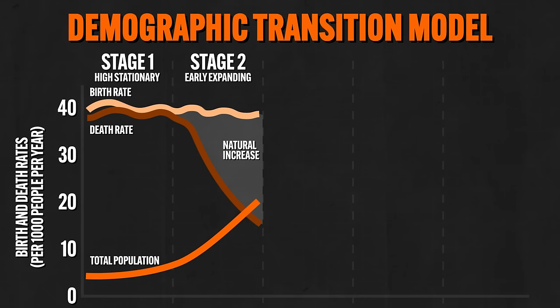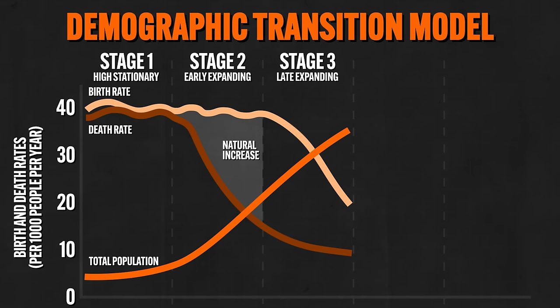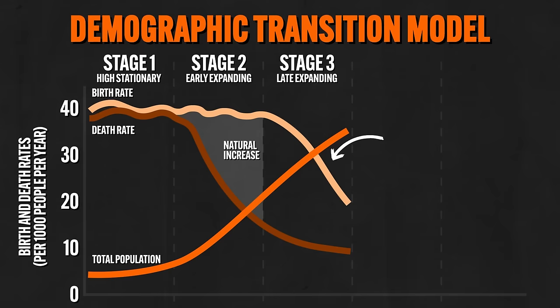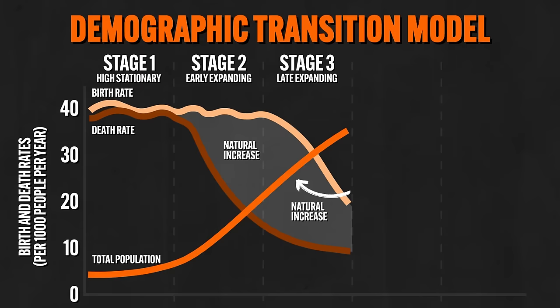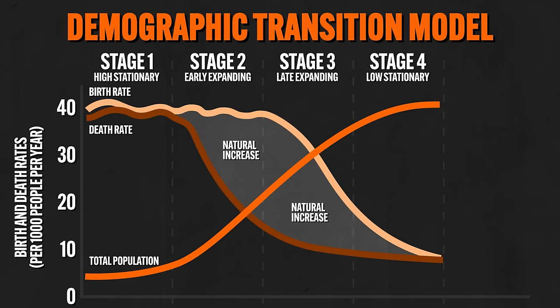Stage three is the late expanding stage. Populations continue to industrialize, medicines improve, more people have access to nutritious food, and education becomes more important. Under these conditions the birth rate begins to decrease sharply because children are less of an economic asset. There are still more births than deaths, so the population grows slowly. Many developing nations are in this stage today. Stage four is the low stationary stage, where a country is considered fully industrialized — birth and death rates are similar, leading to slow population growth or stabilization. Most developed nations are in this stage today, facing new worries about an aging population.